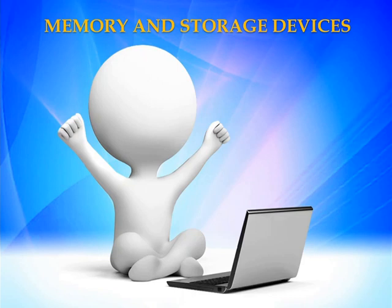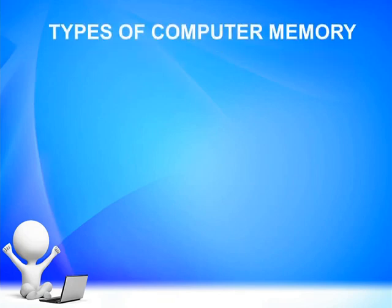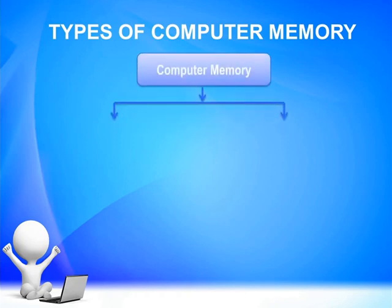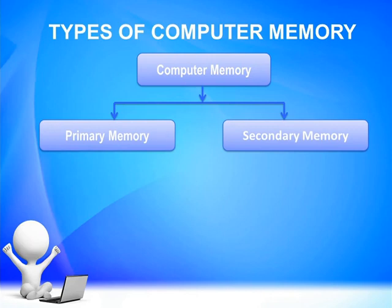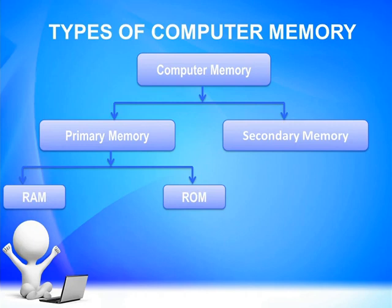Let's recall the types of computer memory through a chart. Computer memory can be divided into two types: primary memory and secondary memory. Primary memory can also be divided into two parts, that are RAM and ROM.